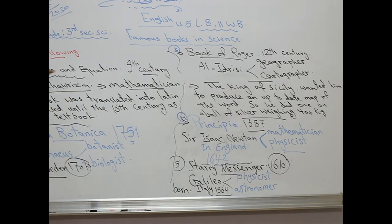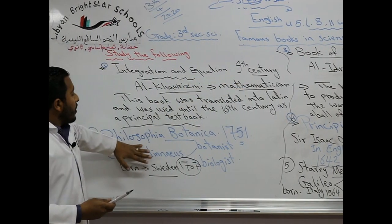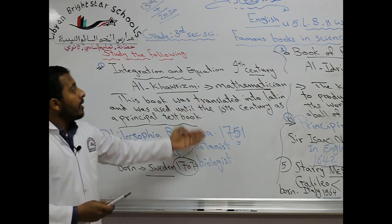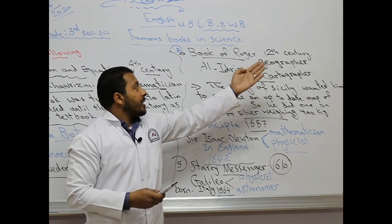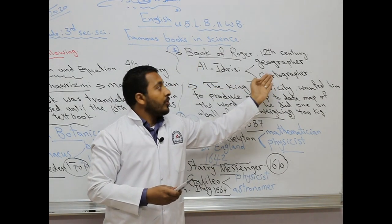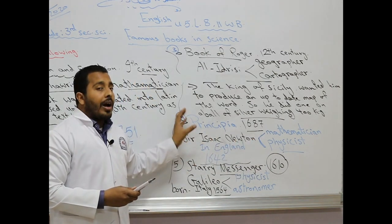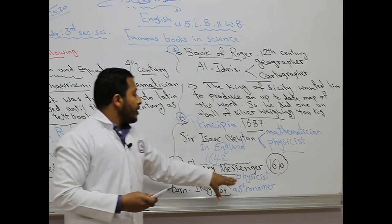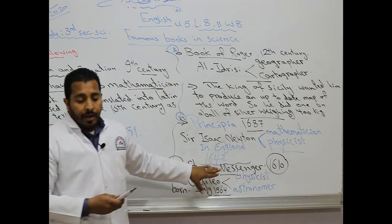To sum up: Integration and Equation in the 9th century by Al-Khawarizmi, he was a famous mathematician. Philosophia Botanica, 1751, by famous scientist Carlos Linnaeus, botanist and biologist. Book of Roger, or Al-Kitab al-Rogari, written in the 12th century by Al-Idrisi, famous geographer and cartographer. Principia, 1687, by Sir Isaac Newton, mathematician and physicist. Starry Messenger, 1610, by Italian physicist and astronomer Galileo.